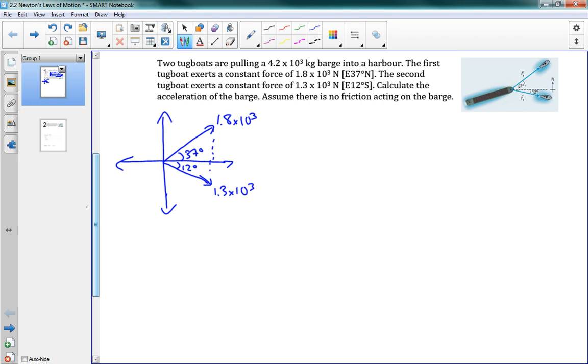And my next one was 1.3 times 10 to the 3 east 12 degrees south. So I'm going to say something like this, 12 degrees, and that was 1.3 times 10 to the 3. There's our picture. Now we want to get the net x force. And so I can just add my x components. So I'm going to have from the first one 1.8 times 10 to the 3 cosine 37 degrees, and now in the same direction 1.3 times 10 to the 3 cosine 12 degrees. And that's going to give me 2709.14 newtons east.